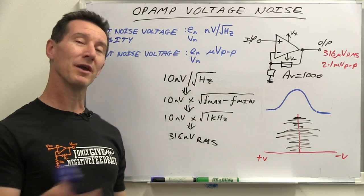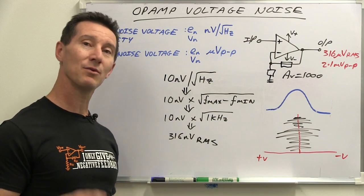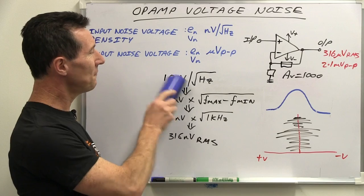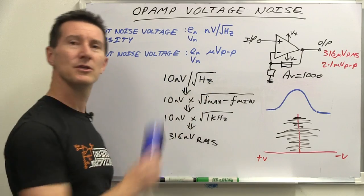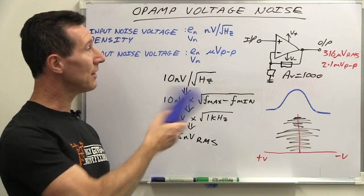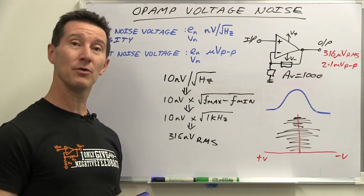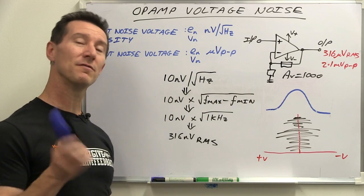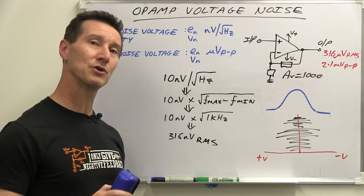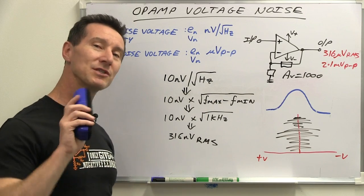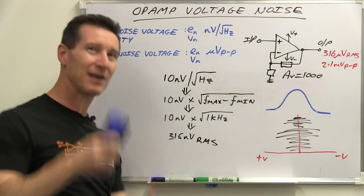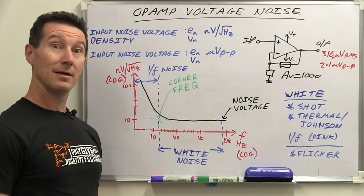That is going to be your output noise just solely due to your op-amp, not taking into account any other components or any other part of your circuit. So that's really quite easy to understand once you know — just multiply that figure by the square root of your bandwidth, and you get your output noise in RMS. Very simple. But there's more to it — let's go a little bit deeper, open that can of worms just a little bit more.